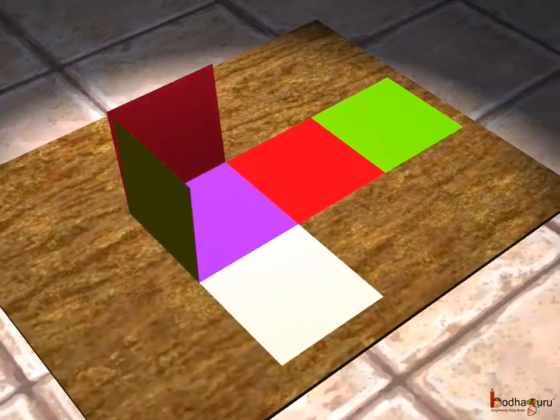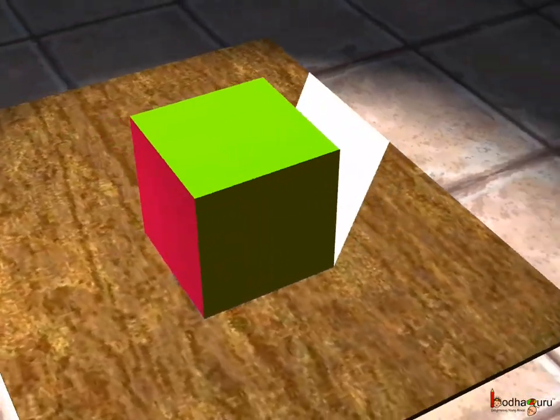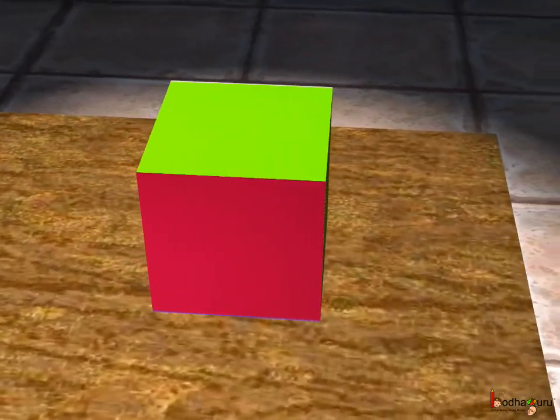We can fold the net of the cube along the edges to get the solid shape back.